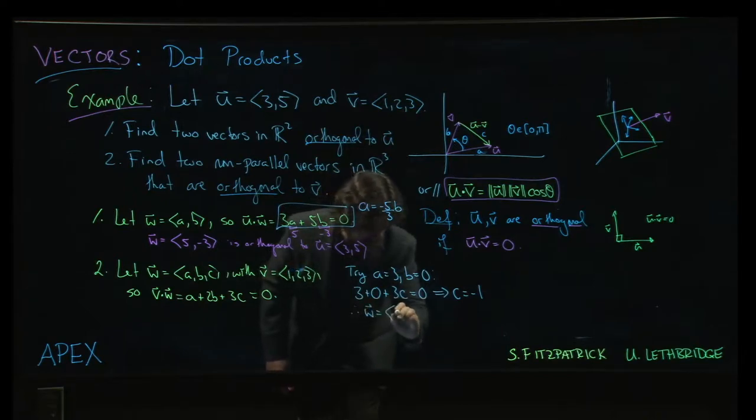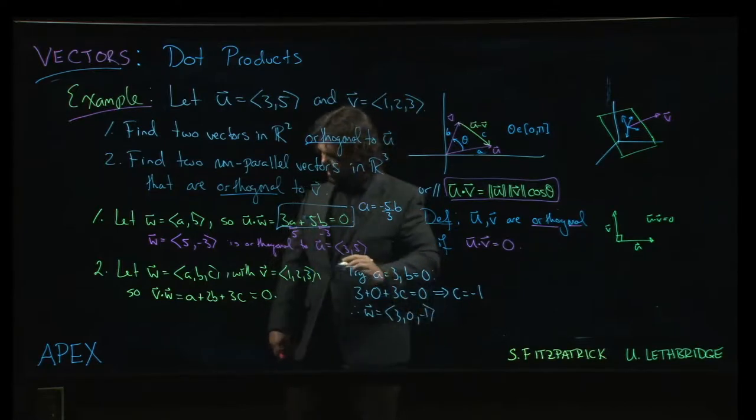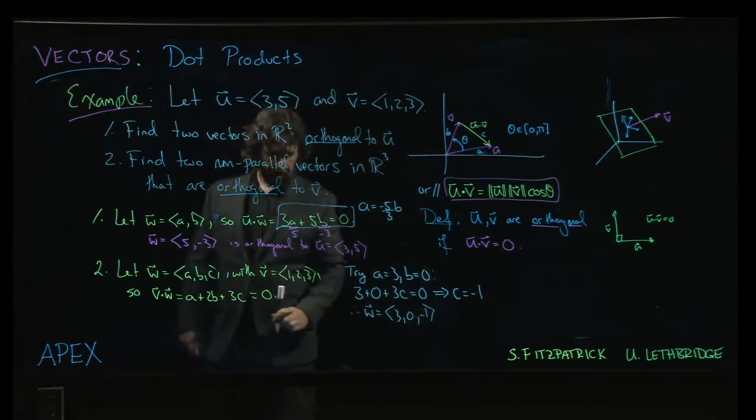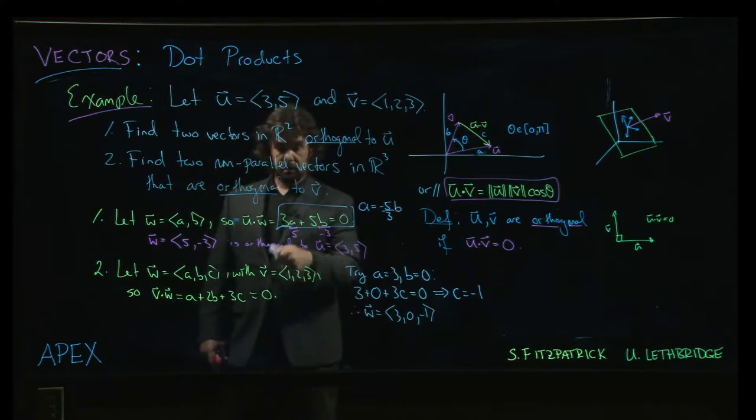We can check by doing a dot product that that is indeed orthogonal to the vector v that we started with.